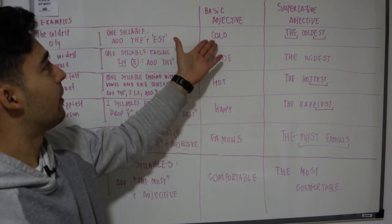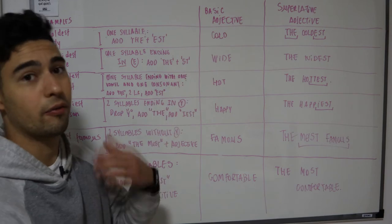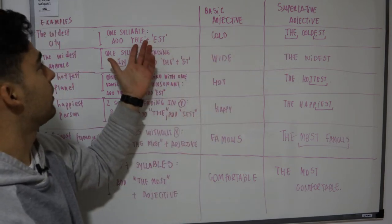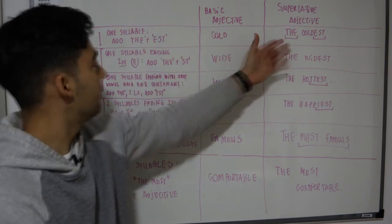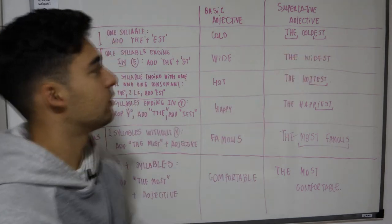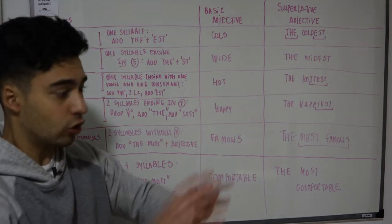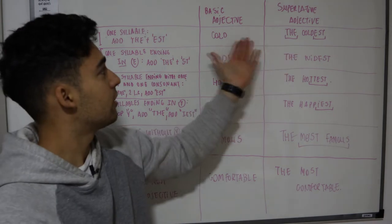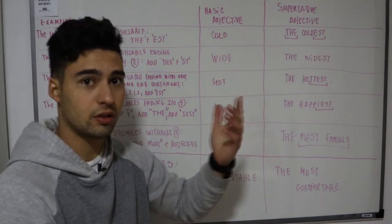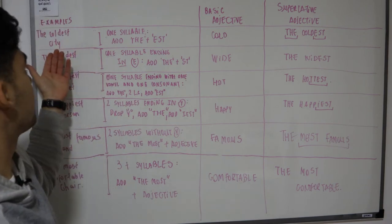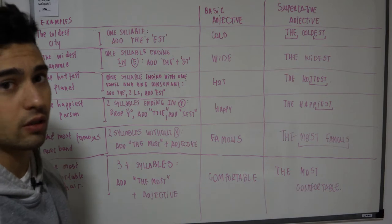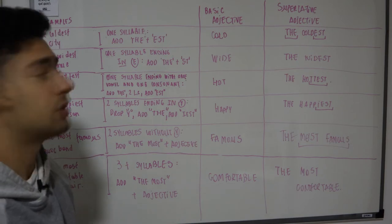En el primer caso tenemos para el adjetivo conocido como cold, que sería frío. En el superlativo, la regla dice que para los adjetivos de una sílaba se agrega la palabra the y al final de esa palabra se escribe est. Entonces para decir el más frío de todos en un conjunto decimos para cold, the coldest. Y como ejemplo tenemos the coldest city, la ciudad más fría de todas. De todas las ciudades, la más fría.